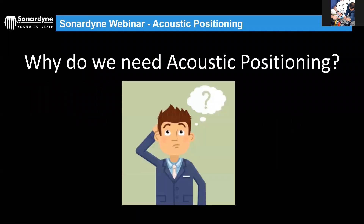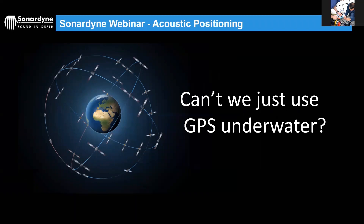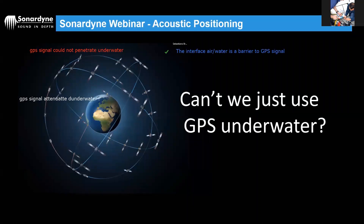So we understand it's using sound to position something underwater. But why do we need acoustic positioning? Why can't we just use GPS? What's stopping us from using GPS or GNSS underwater? The GPS signal is an RF signal — it's very, very weak. Salt water, or any water in fact, attenuates the signal rapidly. It doesn't penetrate water; the air-water surface is a barrier to GPS signals. Satellites can't swim.